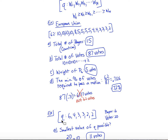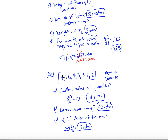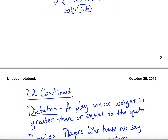Here's another example: a weighted voting system with quota Q and players with weights 4, 3, 3, 2, 2 — six players, totaling 20 votes. The smallest Q can be: since 20 divided by 2 is 10 (which is 50%), you need more than 50%, so the minimum is 11 votes. The largest Q can be is 20 votes. For example, if Q is three-fourths, then three-fourths of 20 is 15, and that would be a valid quota.